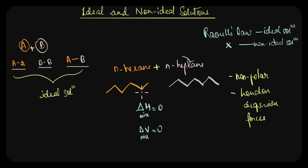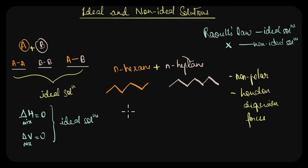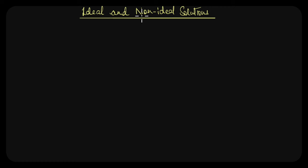Because N-hexane and N-heptane are very similar in structure, one liquid molecule can substitute for the other or fill the space between the molecules of the other, so there is no increase in volume when they are mixed. These are the characteristics of ideal solutions. Another example is benzene and toluene — when mixed, the interactions between benzene-benzene and toluene-toluene molecules are similar to those between benzene and toluene molecules.